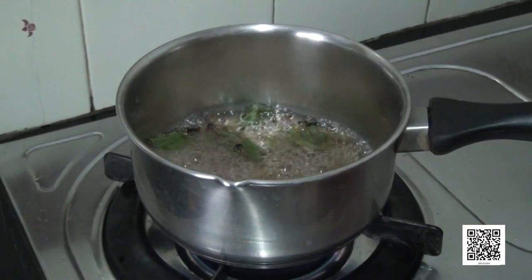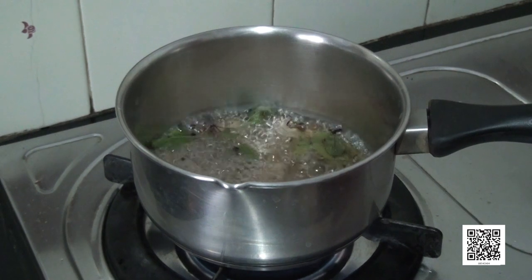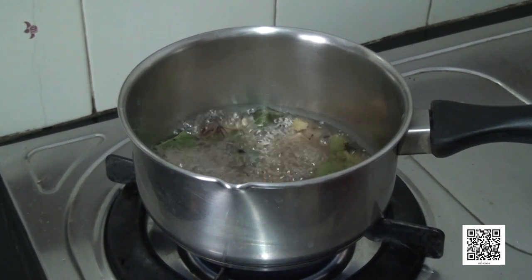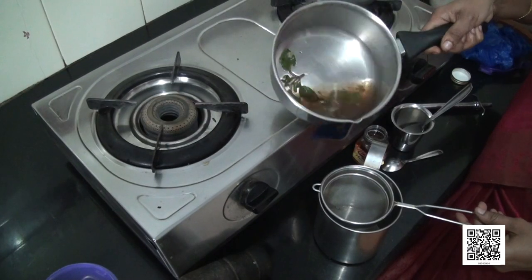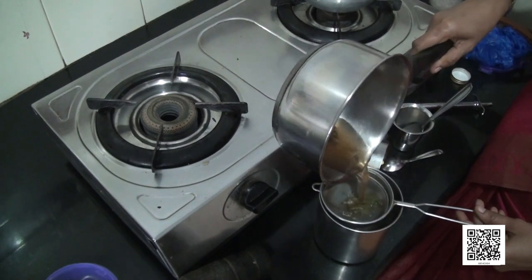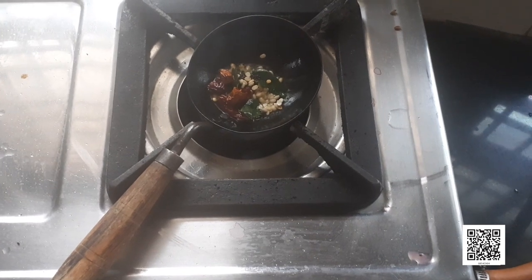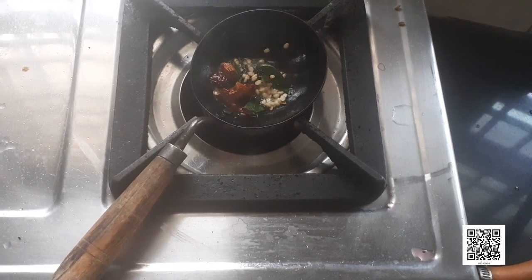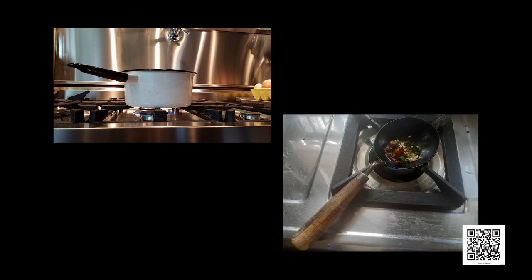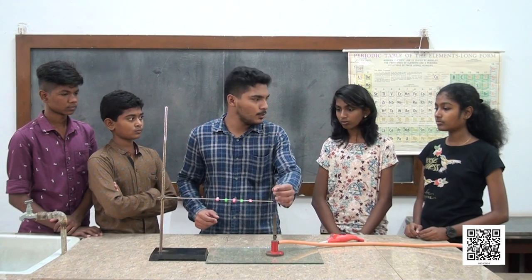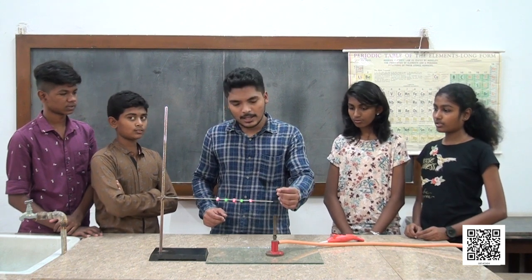In the kitchen while cooking, you cannot hold a metal pan or pot because it is hot. So you use a cloth or holder to grab the hot metal pot. You may also have noticed that some utensils have plastic or wooden handles to prevent us from getting hurt. While heating, metals absorb heat and become hot. In contrast, wood and plastics are poor conductors.